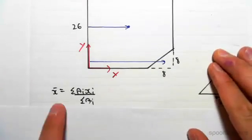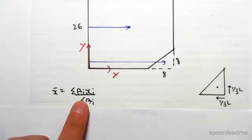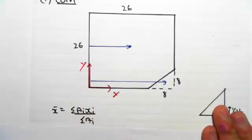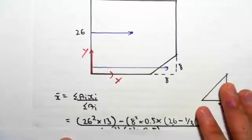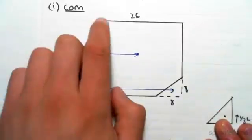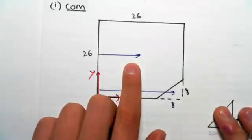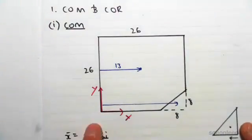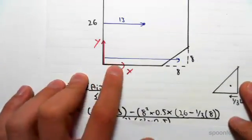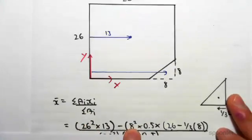For x-bar, it's the sum of each area's component times its own centroid distance from the x-axis, divided by the sum of all the areas. Here's my reference axis. We'll do the square first — its area is 26 squared. The centroid of the square is right in the center, so it's 26 divided by 2, which is 13 meters from the reference x-axis. So: 26 squared times 13.